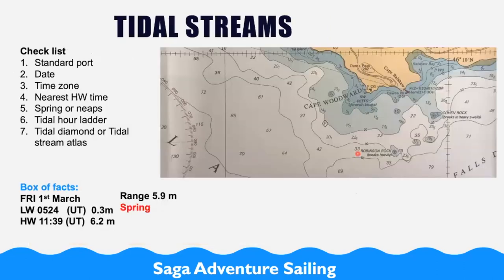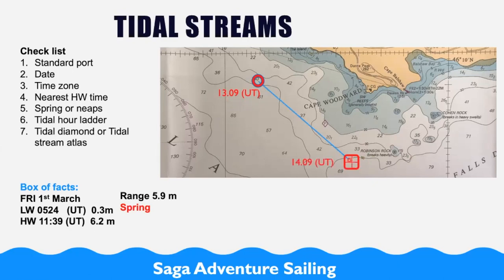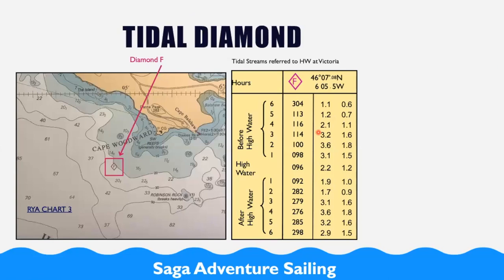Let's look at an example. On the 1st of March, let's say we are here and the time is 1309 UT. We want to go past Robertson Rock, and we will be down there at 1409 — approximately one hour to get there. So we need to find information about tides in this area. Looking at the chart, we can see tidal diamond F. Tidal diamond F refers to a table which is on top of the chart.